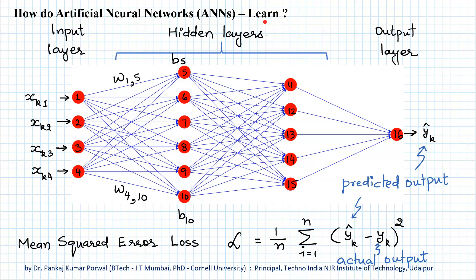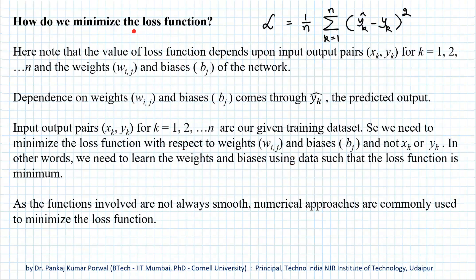Artificial neural networks learn by minimizing the difference between predicted output and actual output for the entire training dataset. The cumulative difference between the predicted output and actual output is measured by the loss function. The value of the loss function depends upon input-output pairs (x_k, y_k) for the entire training dataset and the weights of the links and biases of the nodes in the network.